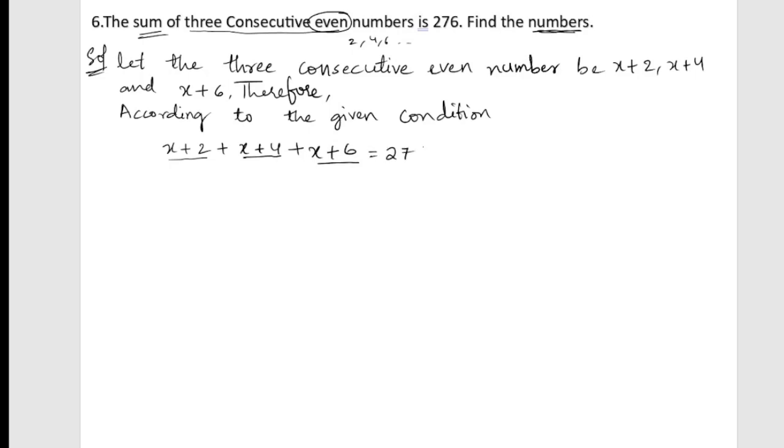Now add: how many x are there? 3x. And 2+4+6=12. So 3x+12=276. Now we will send this 12 to that side: 3x=276-12. By transposing, we get 3x=264.